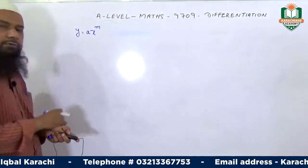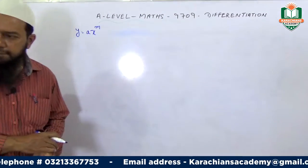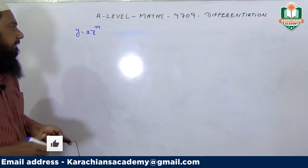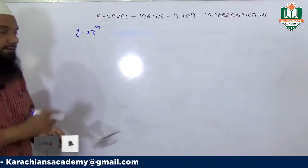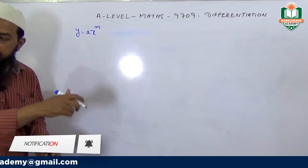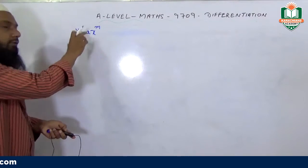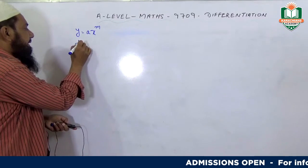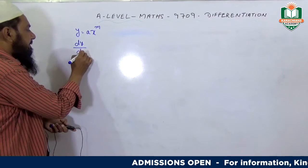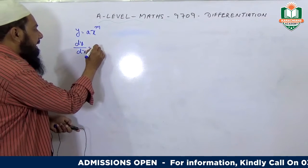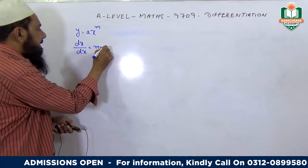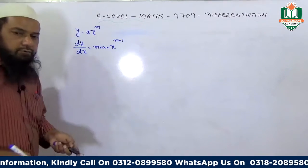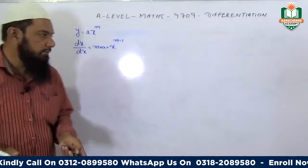We have a function y equals ax^m, in which we have two variables x and y. x is the independent variable, y is the dependent variable. To differentiate y with respect to x, where a is a coefficient and m is a power, dy/dx equals m times a times x^(m-1).